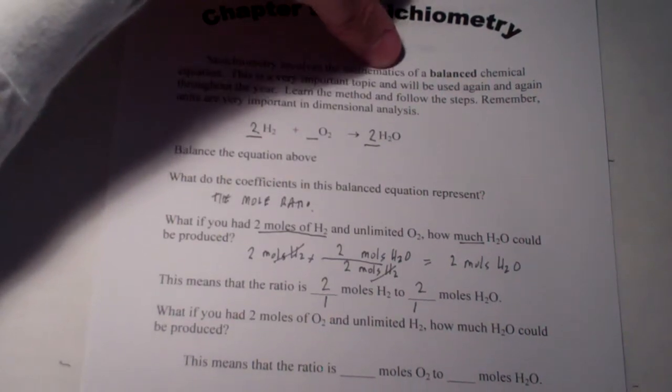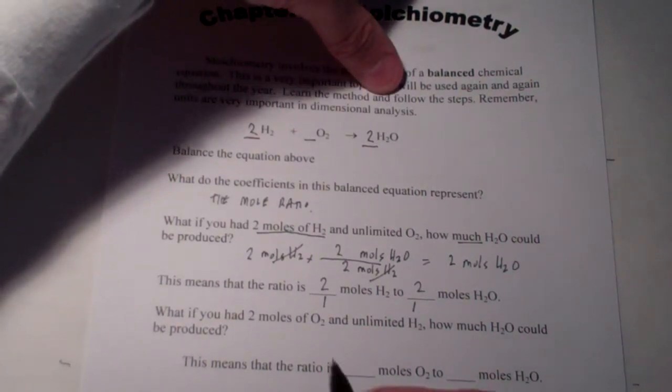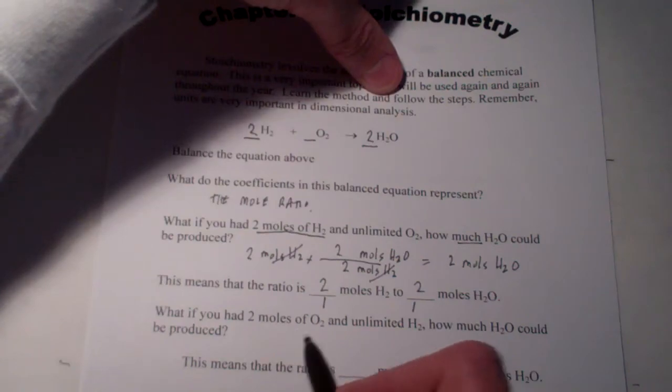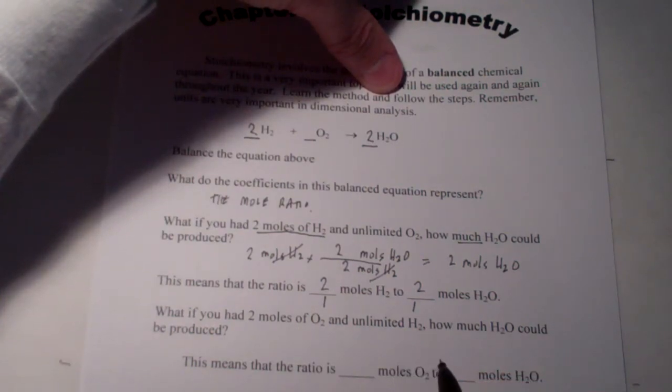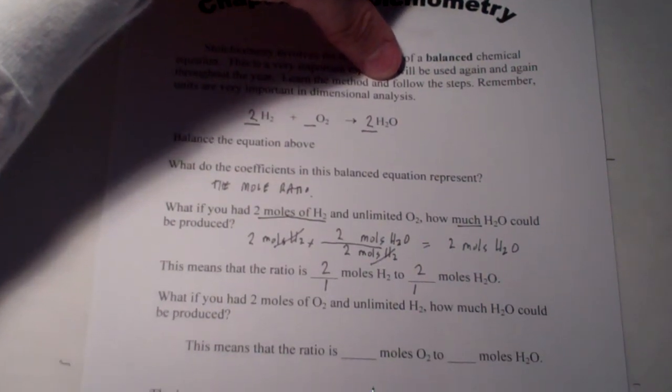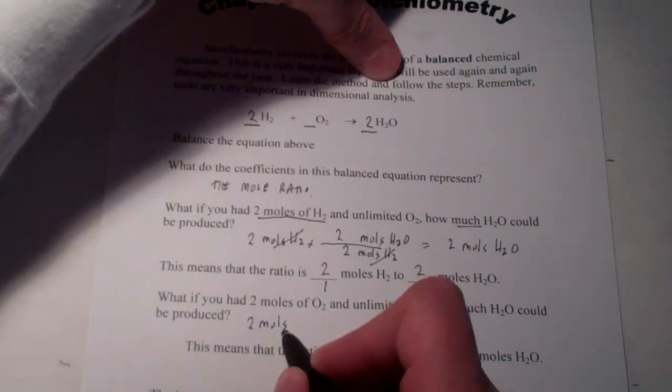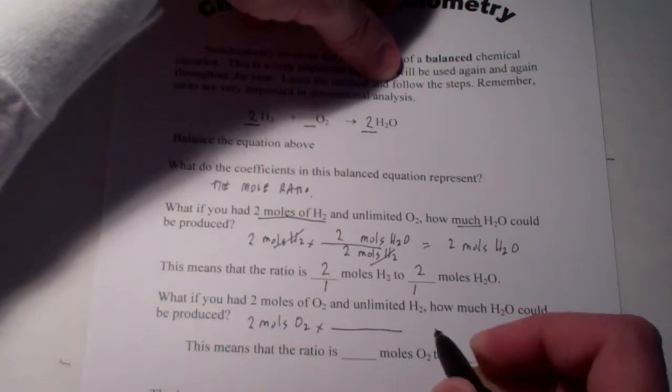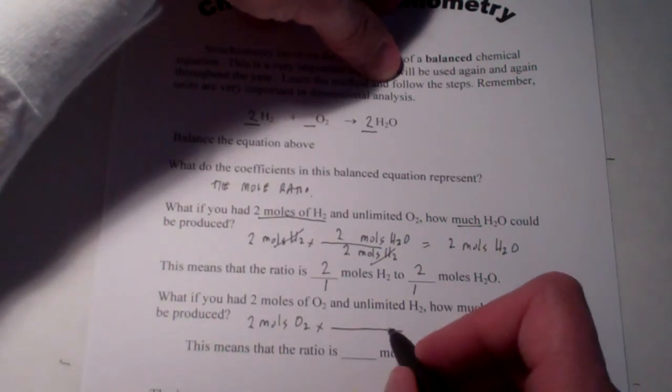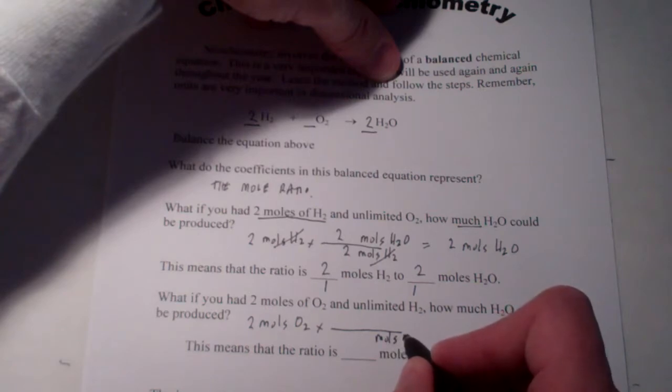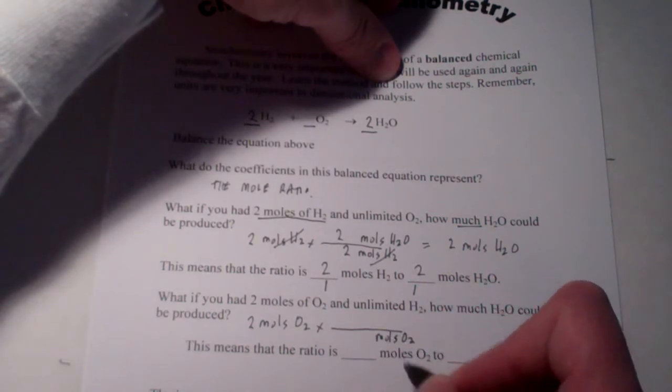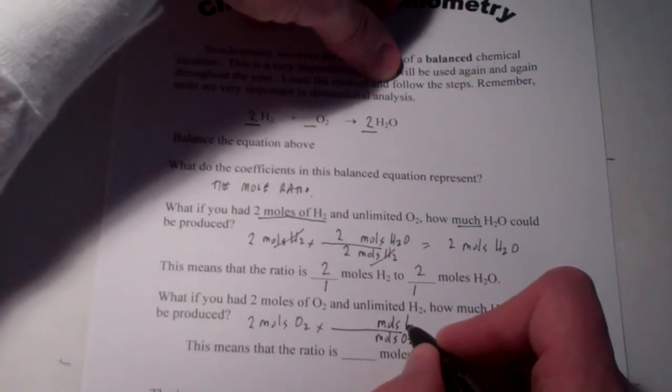Let's do another problem. What if I had two moles of oxygen, and this time unlimited hydrogen? How much water could be produced? Let's see. Two moles of oxygen times conversion factor. We'll put moles of oxygen on the bottom. We're going to get rid of that this time. And we want to get into moles of water.